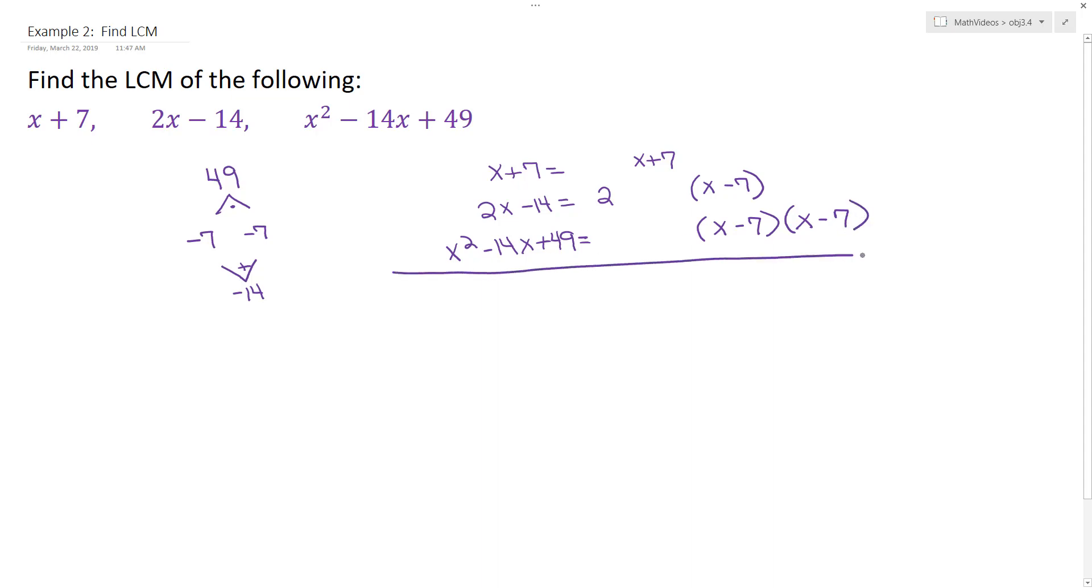So then putting that together, we can determine our least common multiple for all three of these expressions. From our first expression, it says we need a factor of x plus 7.